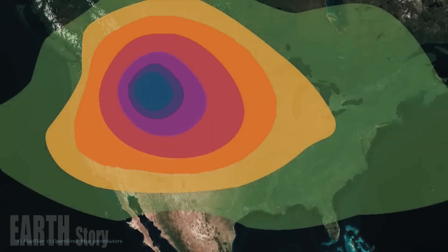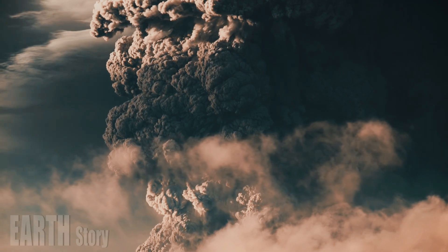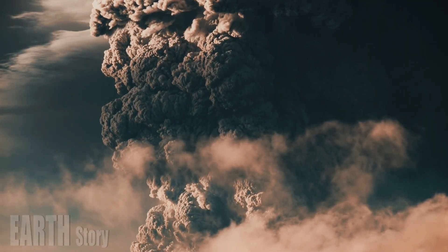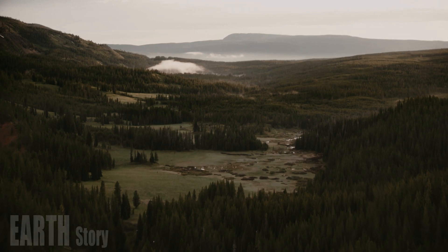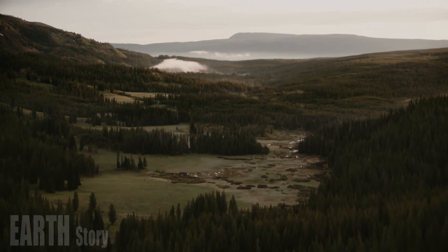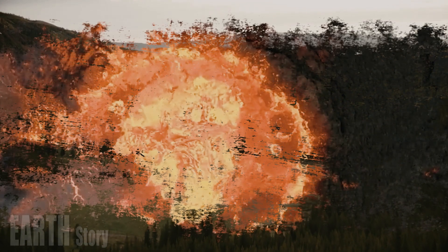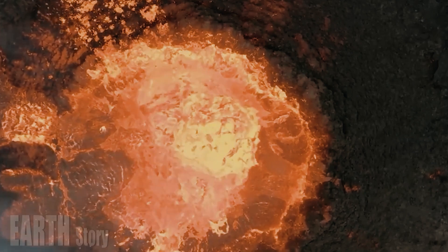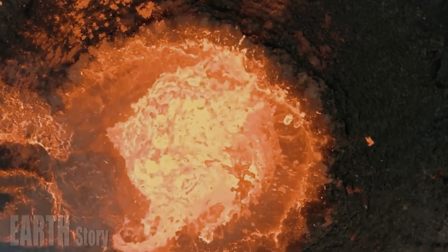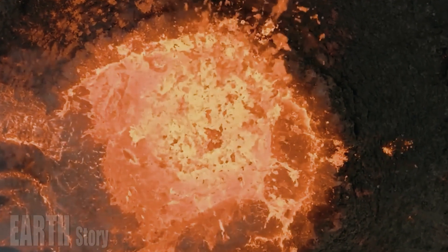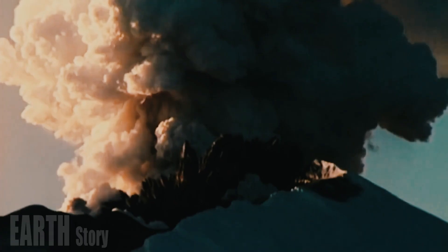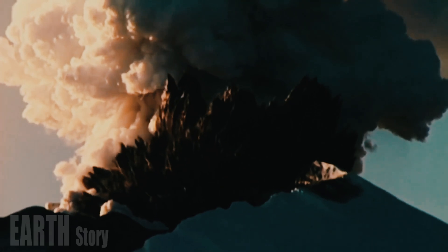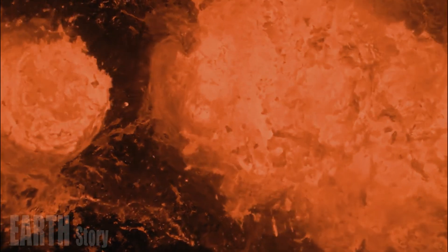In contrast to the 2008 swarm, seismicity in the current swarm does not appear to have migrated over time. However, one interesting aspect of this swarm is that it occurs right on the border of the Yellowstone caldera — a fault that was formed by surface collapse during the most recent large explosive eruption 631,000 years ago.